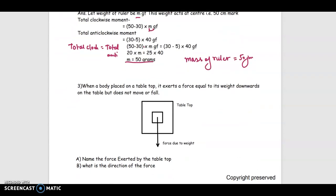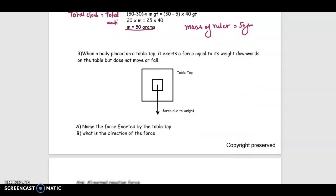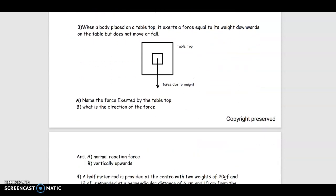When a body placed on a tabletop, it exerts a force equal to its weight downwards on the table but does not move or fall. Name the force exerted by the table top and what is the direction of the force? This is normal reaction force. And the direction of force will be vertically upwards. This will be the direction of the force, the normal reaction force.